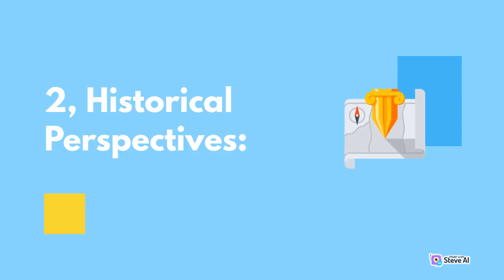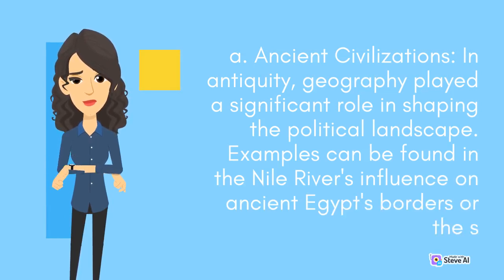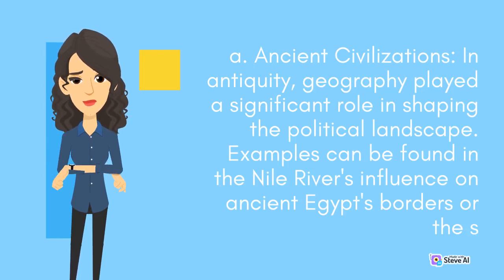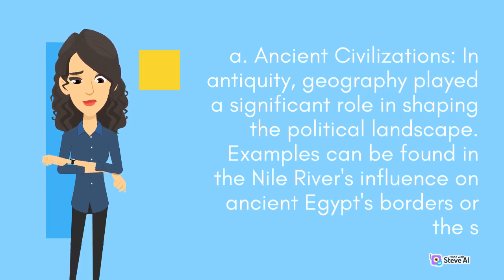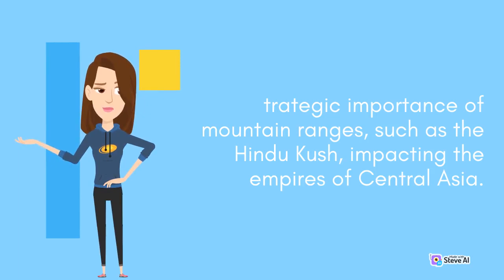Historical Perspectives. Ancient Civilizations: In antiquity, geography played a significant role in shaping the political landscape. Examples can be found in the Nile River's influence on ancient Egypt's borders, and the strategic importance of mountain ranges such as the Hindu Kush, impacting the empires of Central Asia.